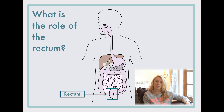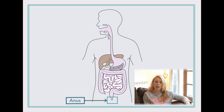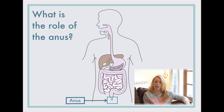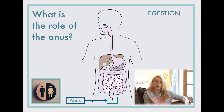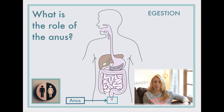The rectum stores the faeces until it receives information from the brain, and then the anal sphincter will open and the faeces will pass through the anus — that's known as egestion. It's not the same as excretion, because excretion means the removal from the body of waste that has come from a chemical reaction in our cells. Faeces is basically what we can't break down, so it hasn't actually been part of a chemical reaction in the body. A lot of students get those two things confused — they sound quite similar and they both begin with E and end in ION, but just be careful: excretion and egestion are very different.